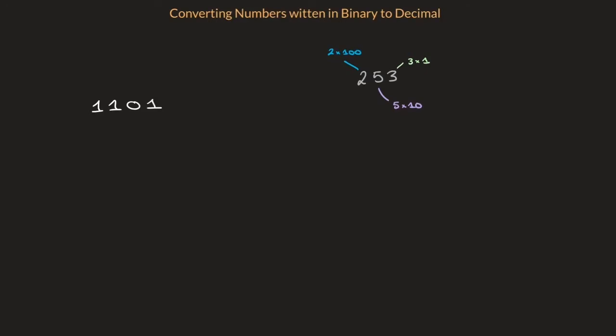In other words, in base 10, when we write 253, what it actually means is 2 times 100 plus 5 times 10 plus 3 times 1. And I'm sure we're all quite comfortable with that.